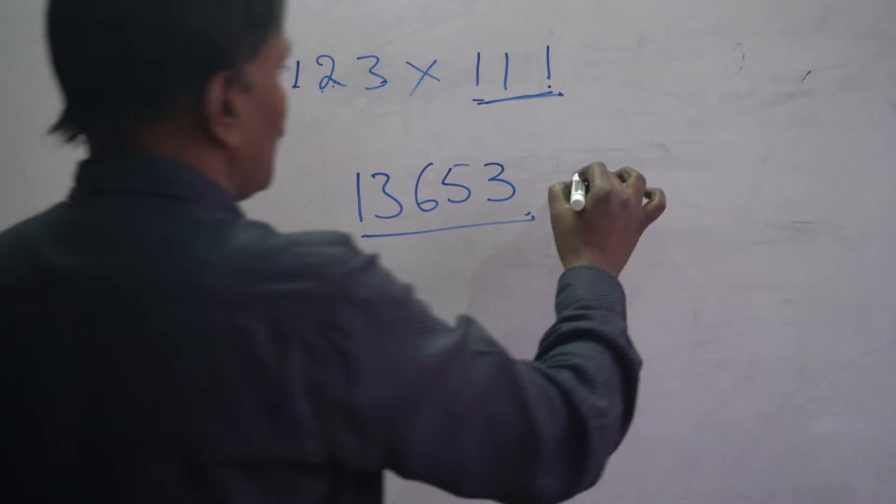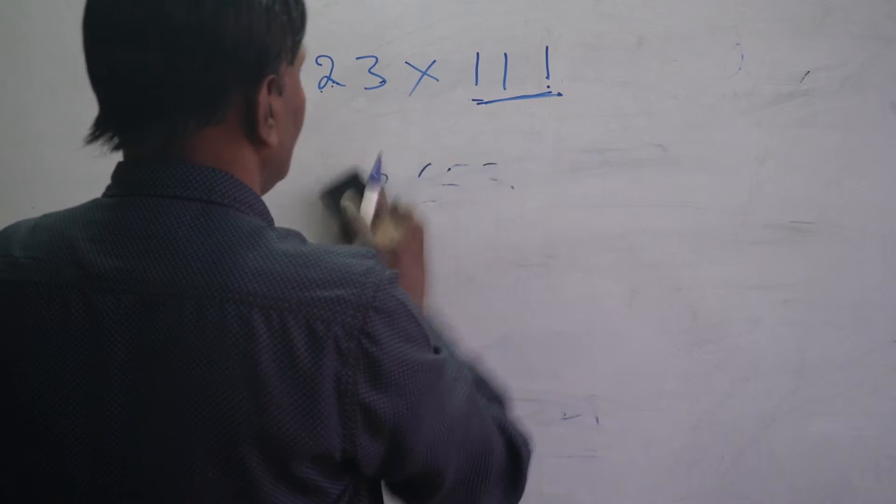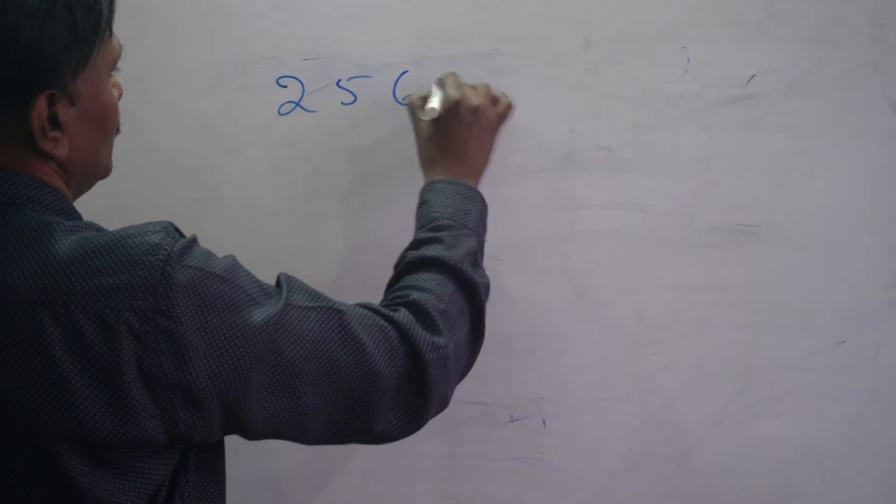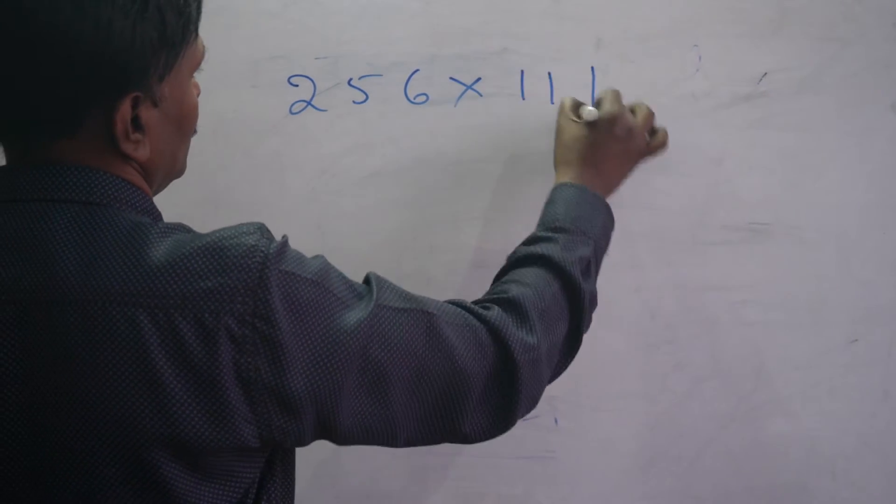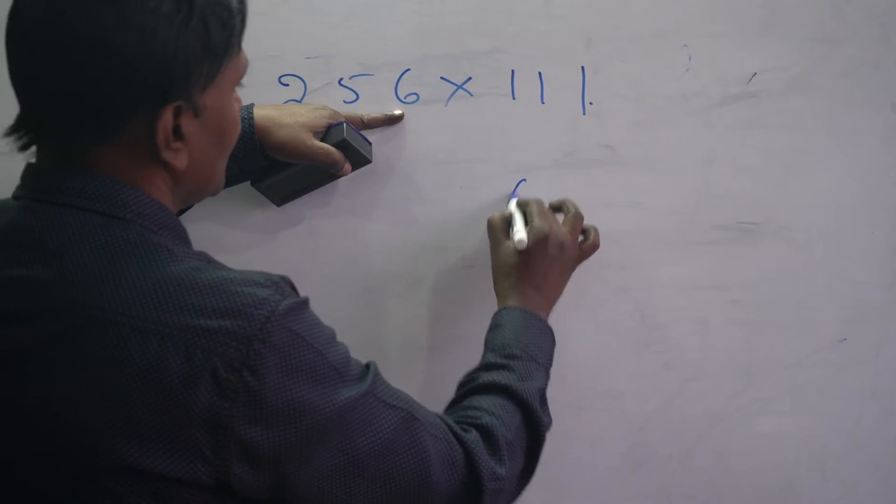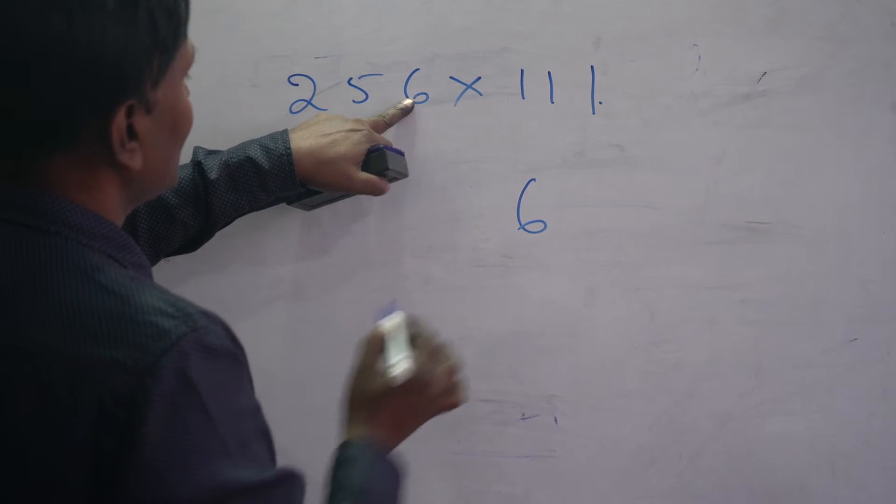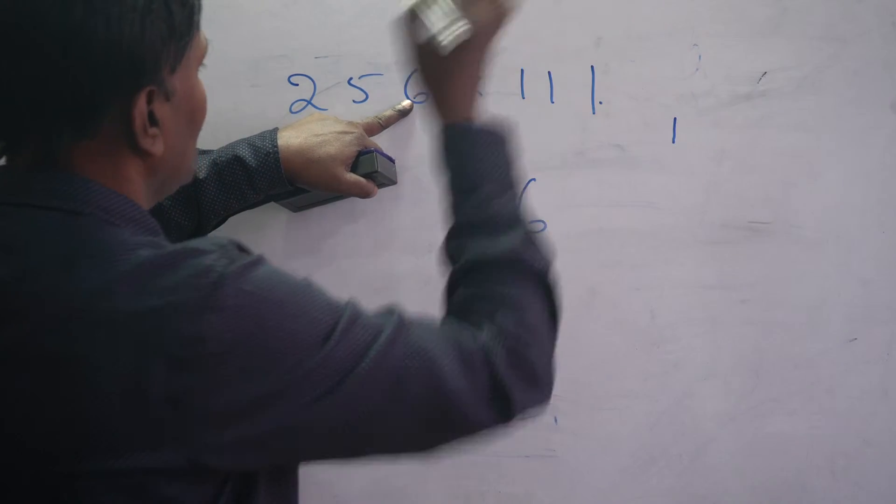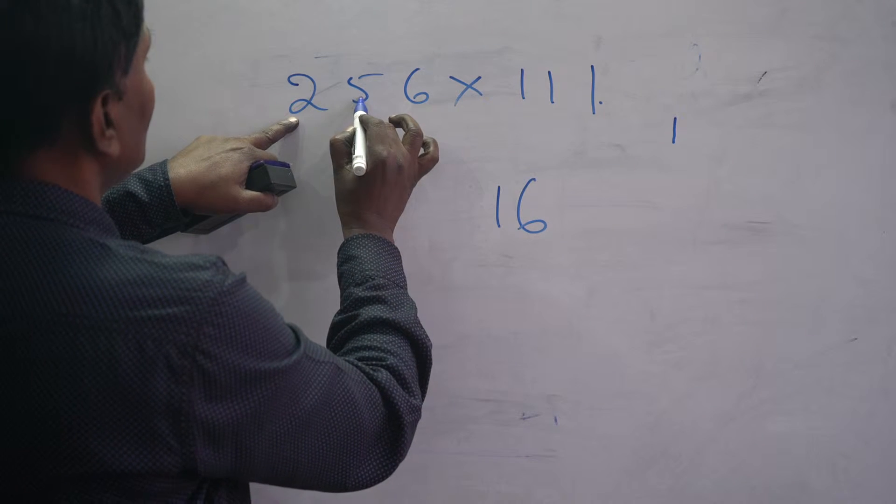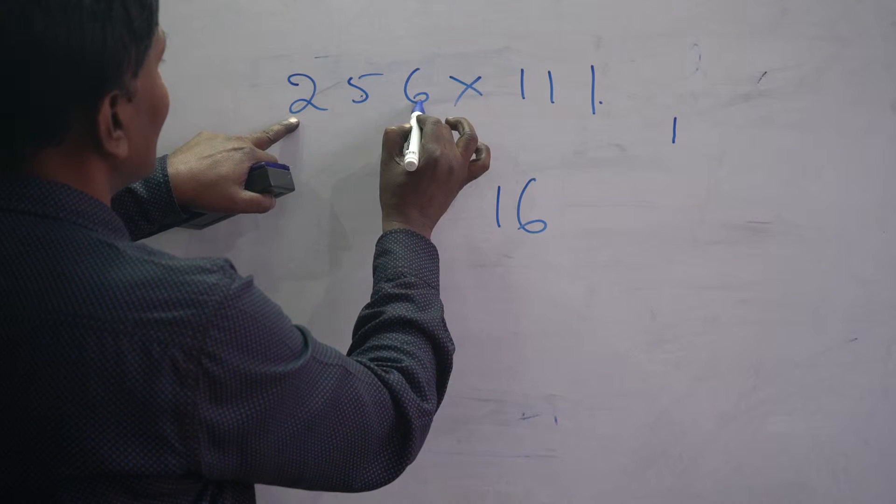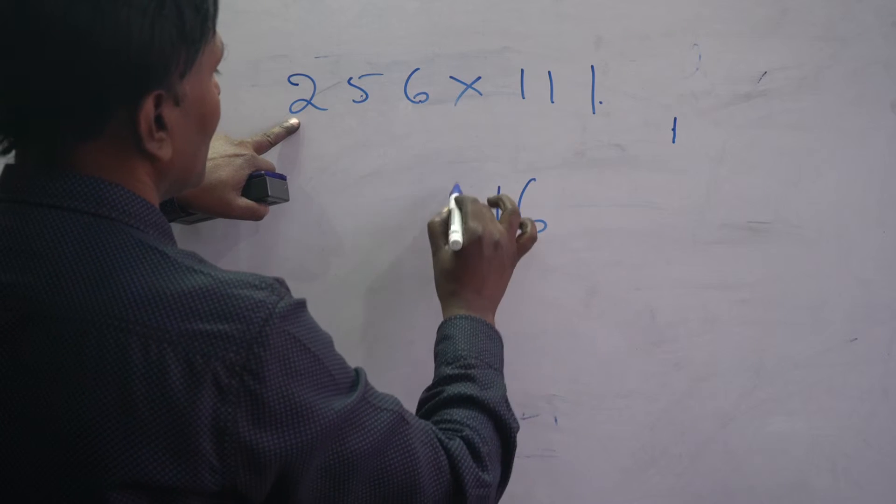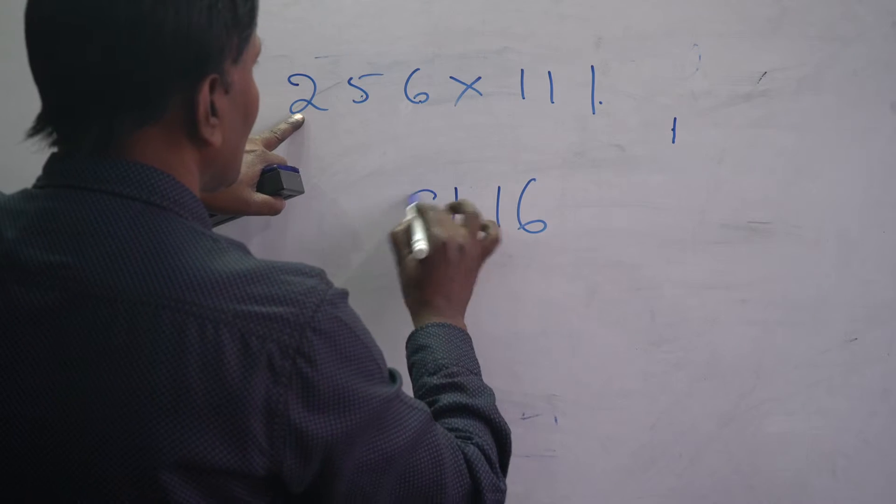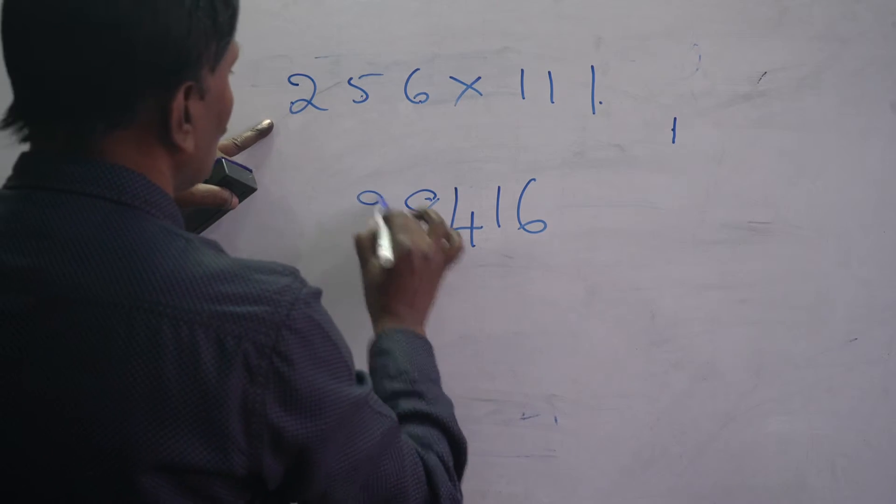Next, we will take one more example: 256 times 111. Here 6, 5 plus 6 is 11, carry 1. 2 plus 5 is 7, 7 plus 6 is 13, 13 plus 1 is 14, carry 1. 5 plus 2 is 7, 7 plus 1 is 8. Here 2. That is the output: 28,416.